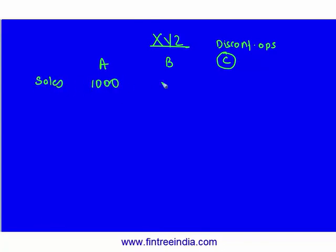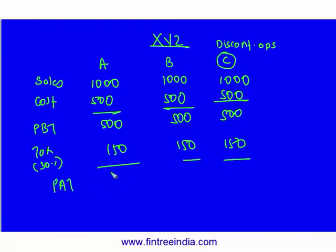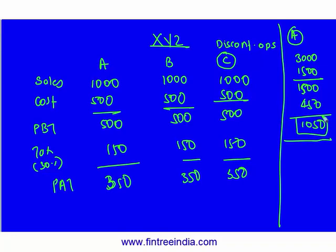Imagine the organization had sales of 1000 and cost of 500 in each of the three units — so profit before tax of 500 per unit. At a 30% tax rate, that gives tax of 150 and profit after tax of 350 per unit. For the consolidated financial statement, one way is to show total sales 3000, total cost 1500, profit before tax 1500, taxes 450, and net profit 1050.